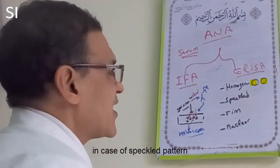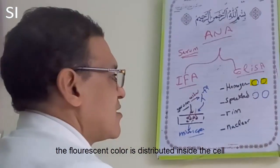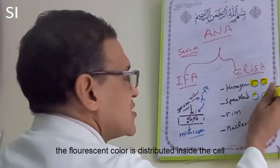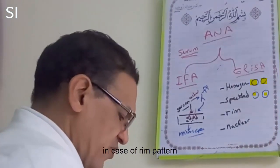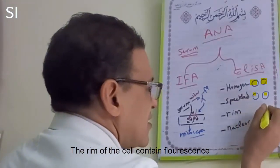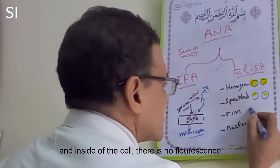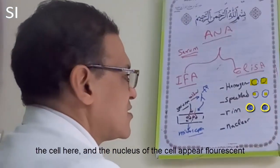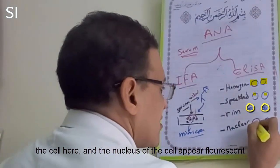In the speckled pattern, the fluorescent color is distributed inside the cell in the form of dots — this is called the speckled pattern. In the rim pattern, the rim of the cell shows fluorescence while the inside of the cell has no fluorescence — fluorescence is present on the rim only. In the nuclear pattern, the nucleus of the cell appears fluorescent.